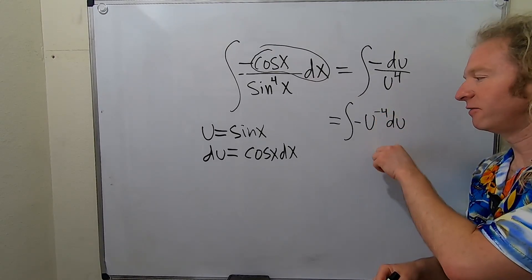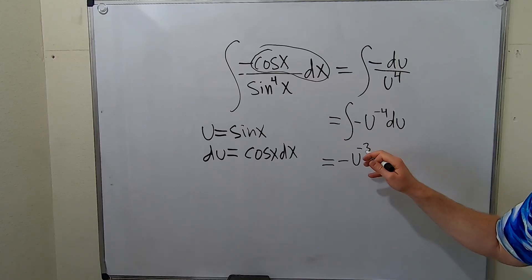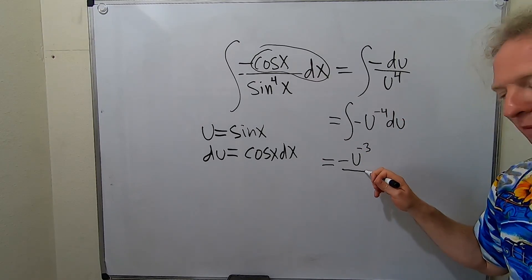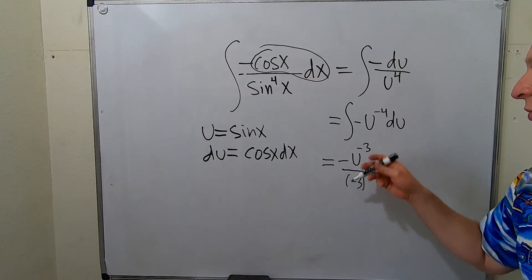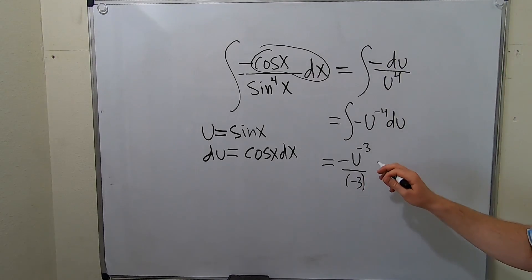So now we can add and divide by the result using the power rule. So this is negative u to the negative three, and you divide by negative three. That's the power rule. You add one to this and divide by the result, plus our constant of integration, capital C.